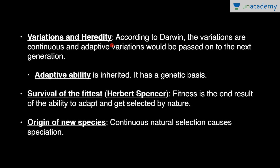The next feature is variations and heredity. According to Darwin, variations are continuous, and adaptive variations would be passed on to the next generation. Except for identical twins, no individuals are exactly alike — these differences are called variations. Some individuals are better adjusted to their surroundings than others. Variations that are helpful for adaptation are passed on to the next generation as adaptive variations, while useless variations disappear. Adaptive ability is inherited and has a genetic basis.